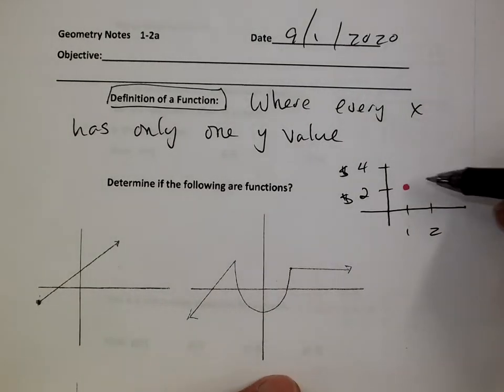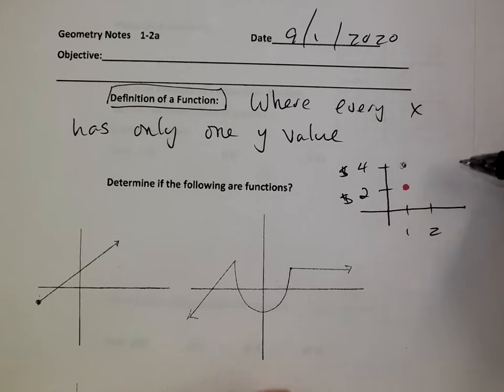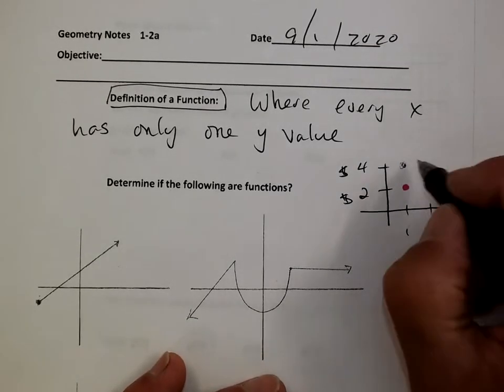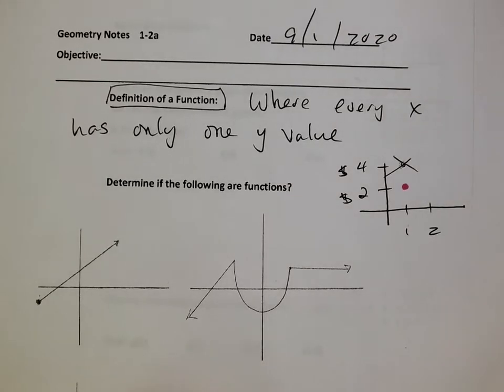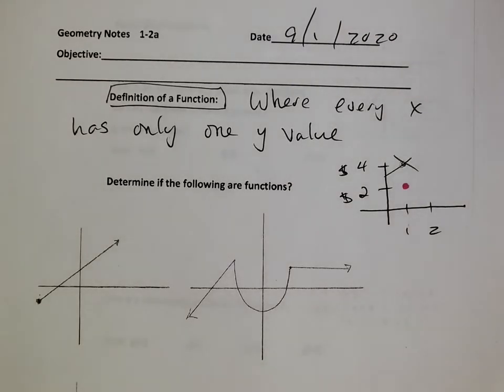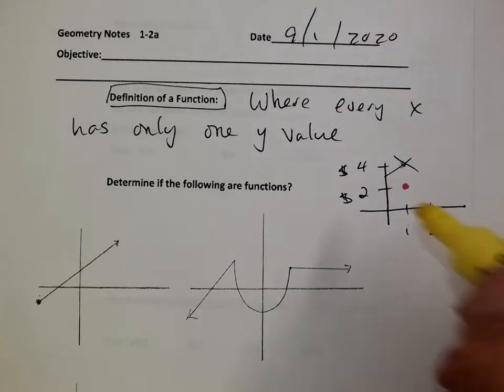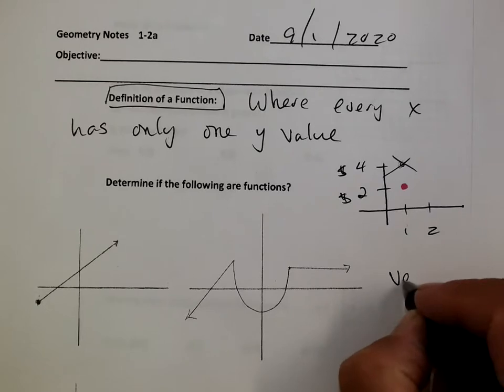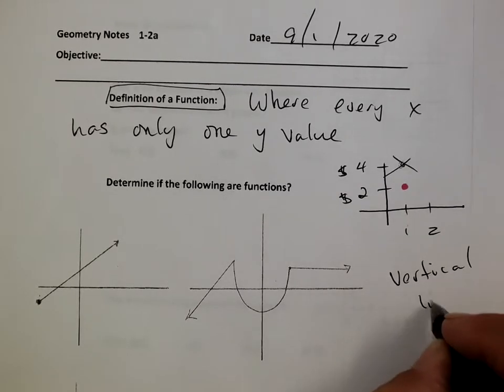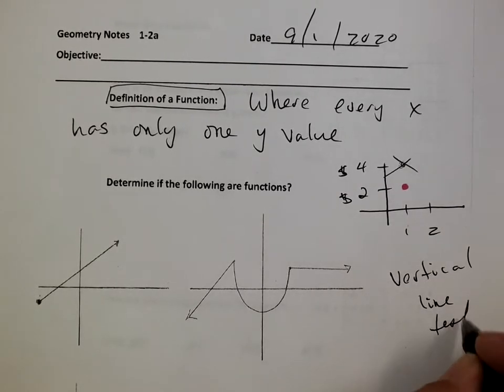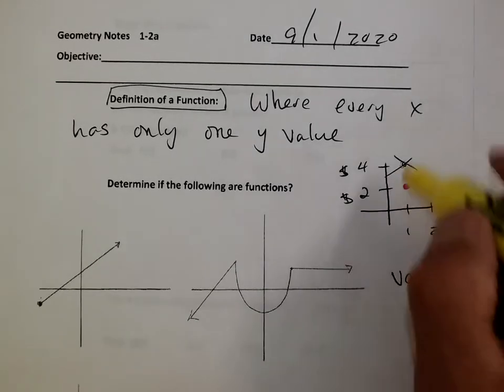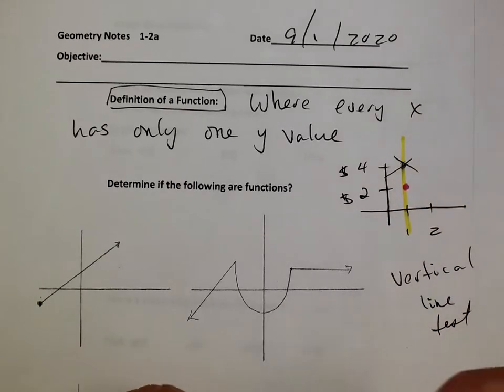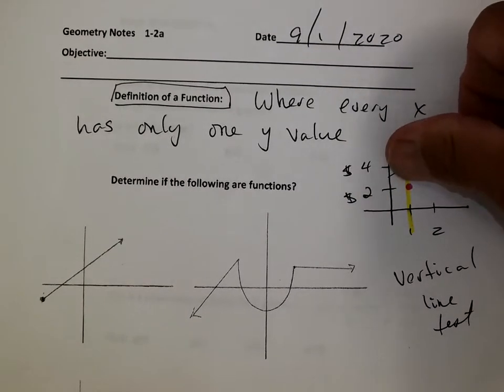So if I had another point up here, right there, it wouldn't work. That is not a function. You can't have one x value with two different y values. It doesn't make sense. So there's this thing called the vertical line test, which makes it really easy. If you can draw a vertical line straight down, and if it hits more than one point, it's not a function. But if I get rid of that, then it is.